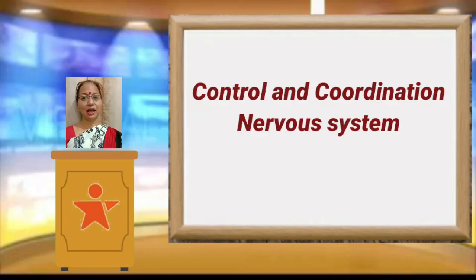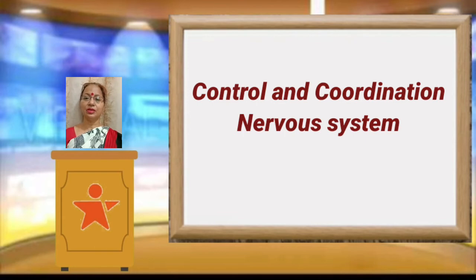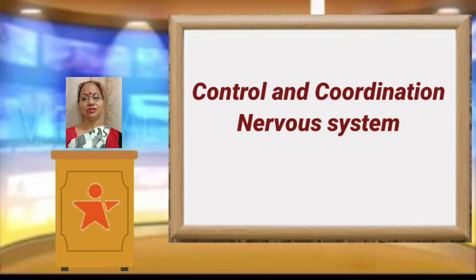Good morning children, welcome back to your bio class. Before holidays we have done chapter 6, that is life processes. Let's start with chapter 7, that is control and coordination. The first lecture of control and coordination will be on the nervous system in human beings, and today's lecture is on neuron and neuromuscular junction.